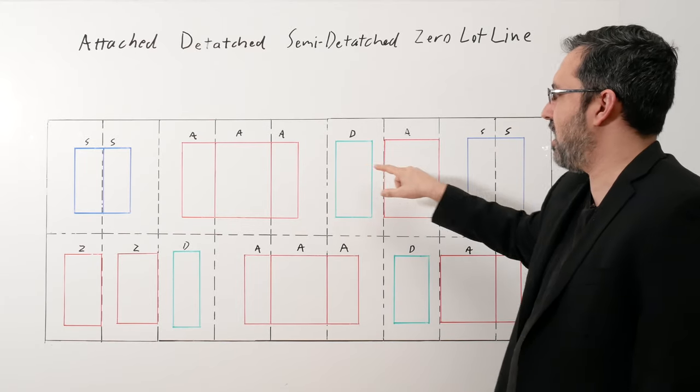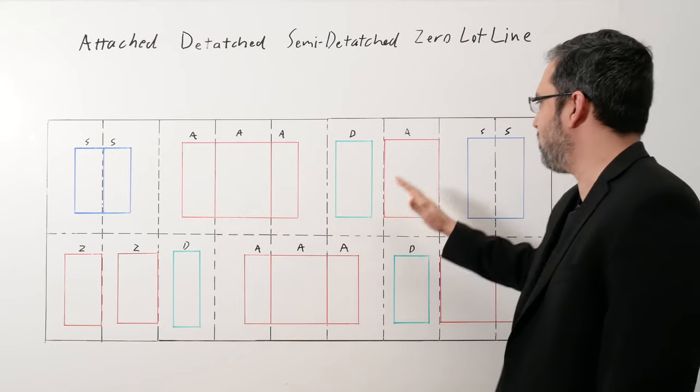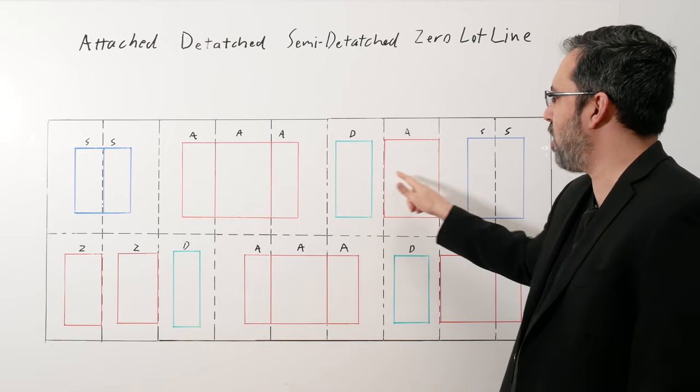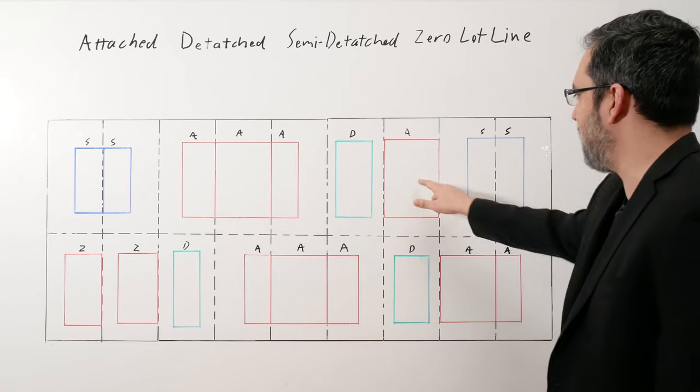A detached has side yards on both sides. It's not touching anything. Doesn't touch a property line. It's a detached. Attached—it touches two property lines. It doesn't have to touch another building. If it's touching two property lines, it's an attached.